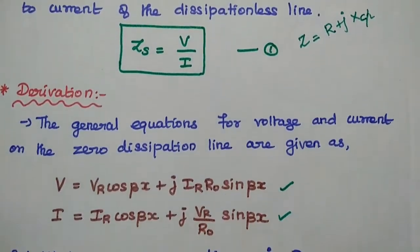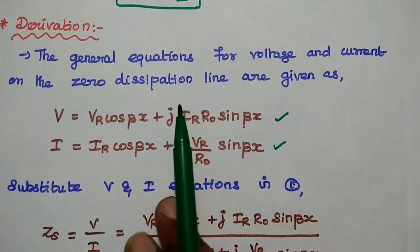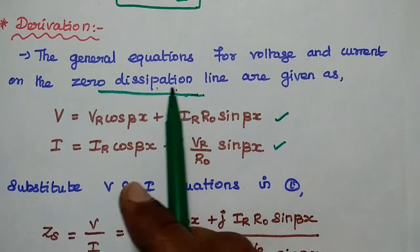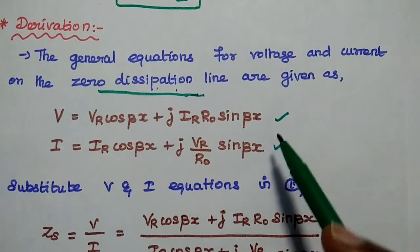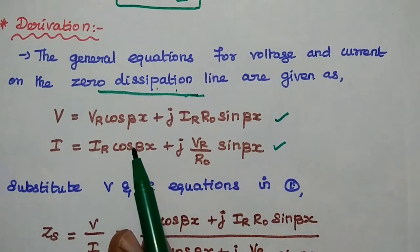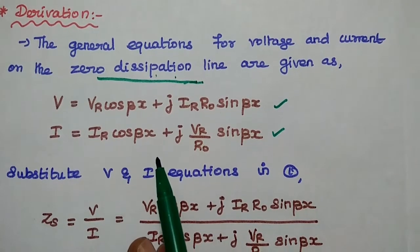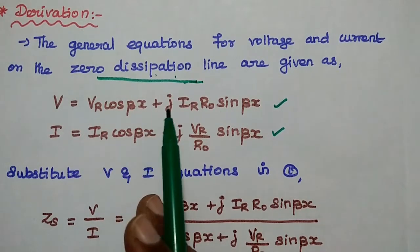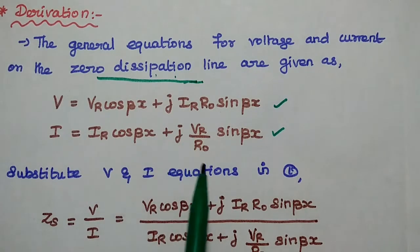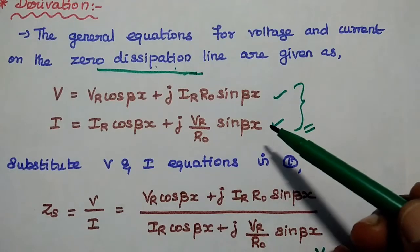So we can take Zs value as V by I — consider that as the first equation. Next, to find out the input impedance, we can take the general equations for voltage and current upon the zero dissipation line or dissipation-less line. Using the previously derived equations, V is equal to VR cos(βx) + j·IR·R0·sin(βx), and I is equal to IR·cos(βx) + j·(VR/R0)·sin(βx). We will use these two equations in the derivation.